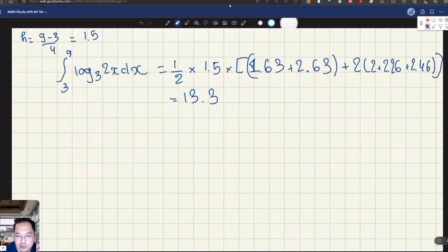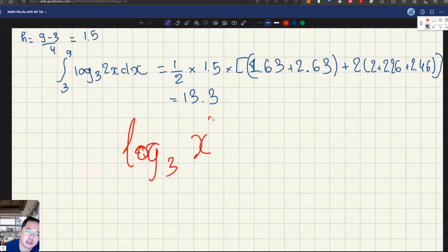Remember the logarithm function has this property. For example, if we have logarithm base 3 of x², we can completely bring this x² down in front. It will become 2 times logarithm base 3 of x.